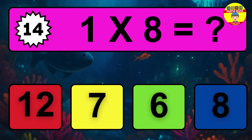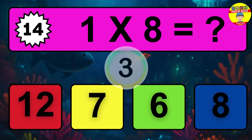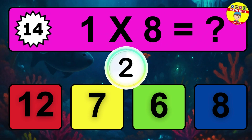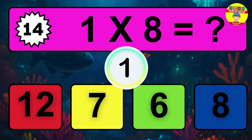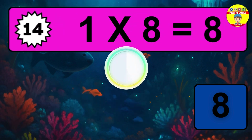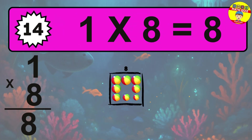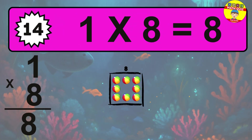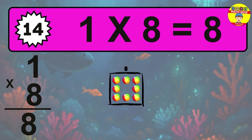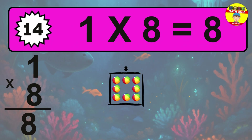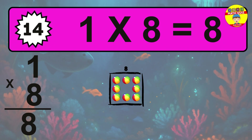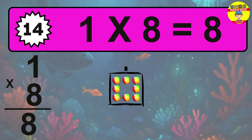Question 14. 1 times 8 equals what? The answer is 1 times 8 is 8. To calculate, we have 1 group with 8 balls each one. So how many balls do we have? 8 balls.